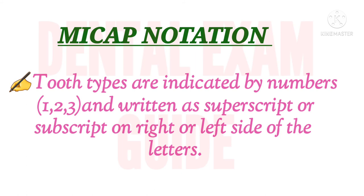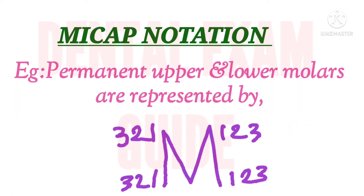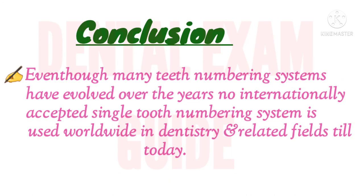Next is the MICAP notation system, which was developed a few years ago. It is an abbreviation where M stands for molar, I for incisor, C for canine, P for premolar, and A for acronym. The two tooth types are indicated by the numbers 1, 2, and 3, written as superscript or subscript on the right or left side of the letter. For example, permanent upper and lower molars are represented in this way.